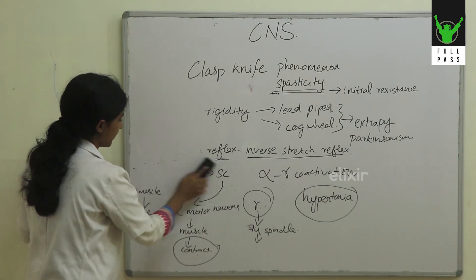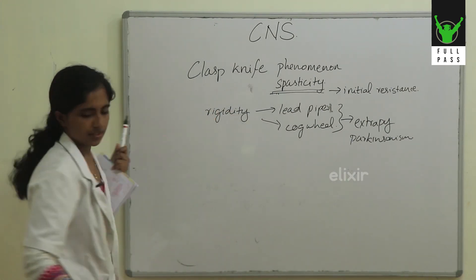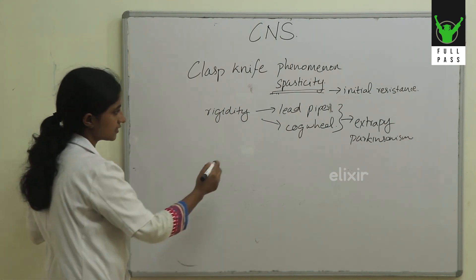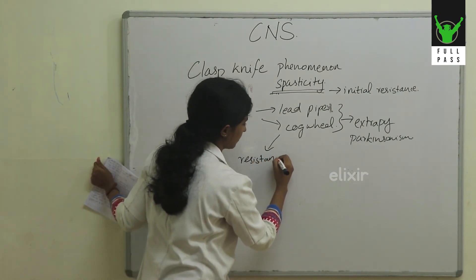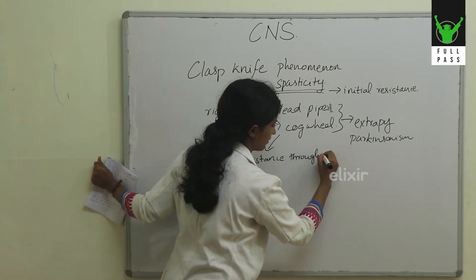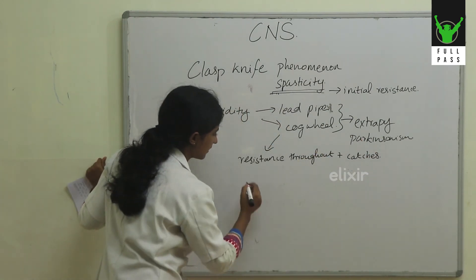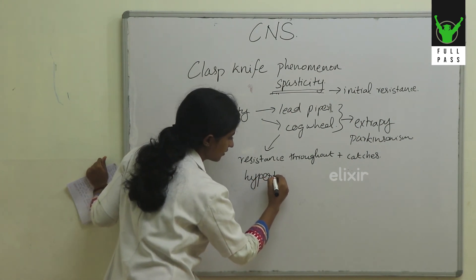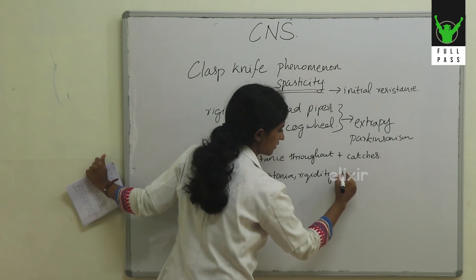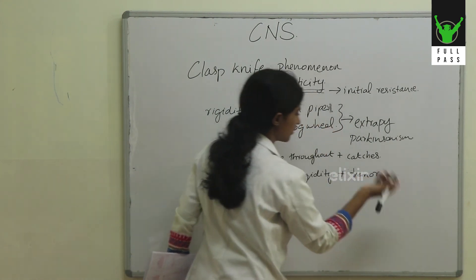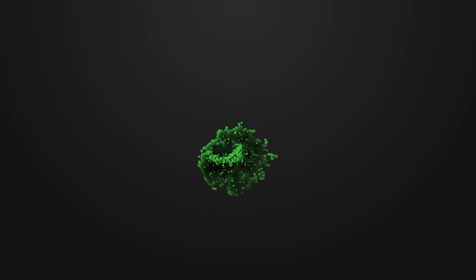Regarding cogwheel rigidity — you have resistance throughout the motion plus catches in between. This happens because of hypertonia or rigidity with tremor being superimposed. That is why you get resistance throughout with catches in between.